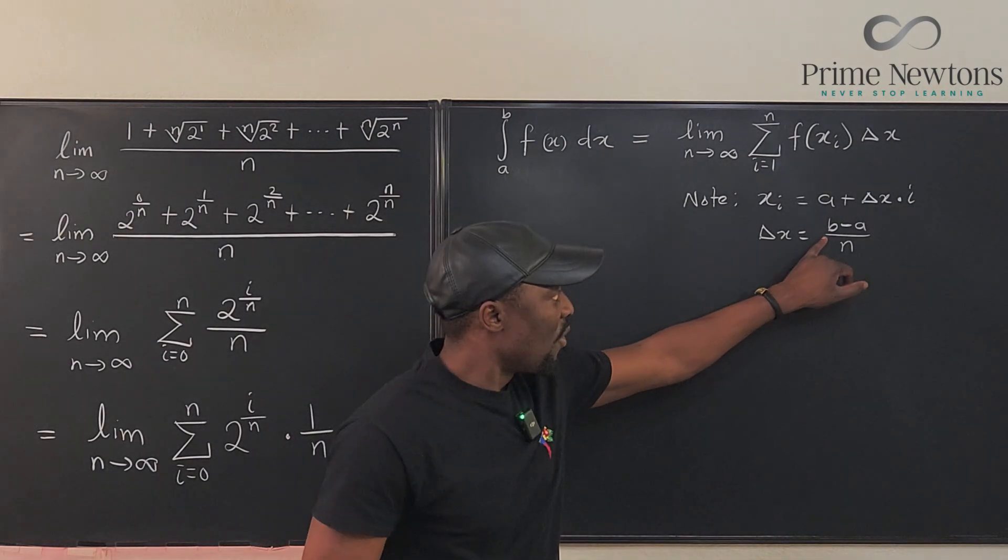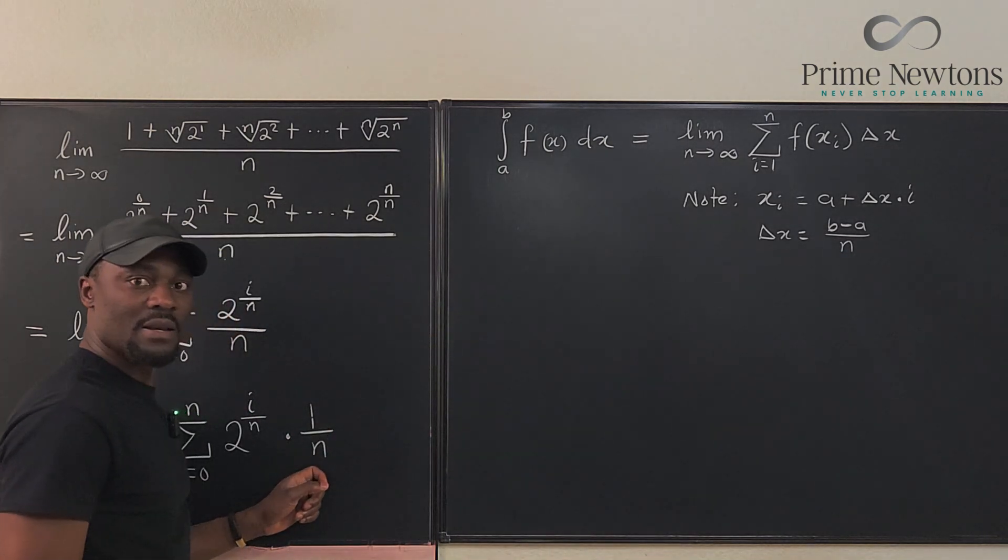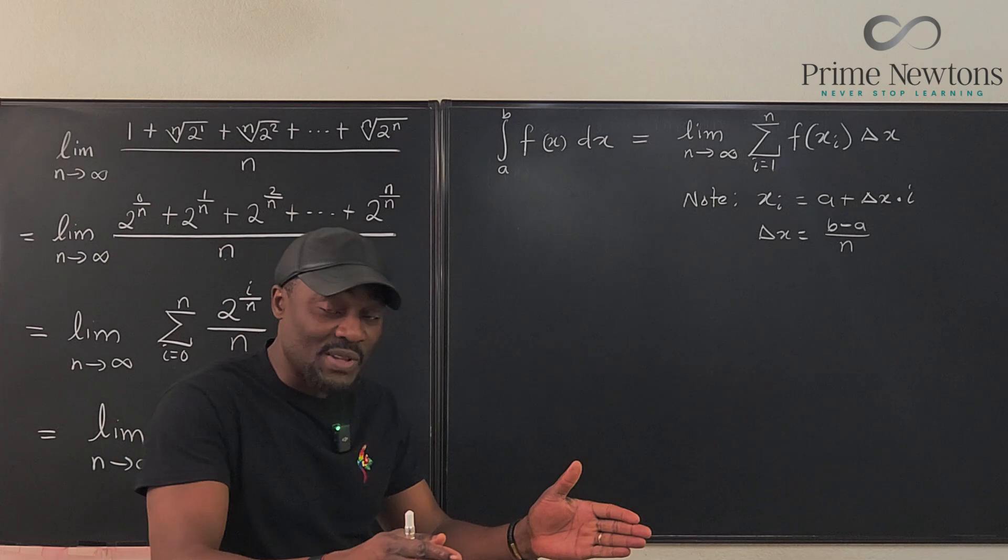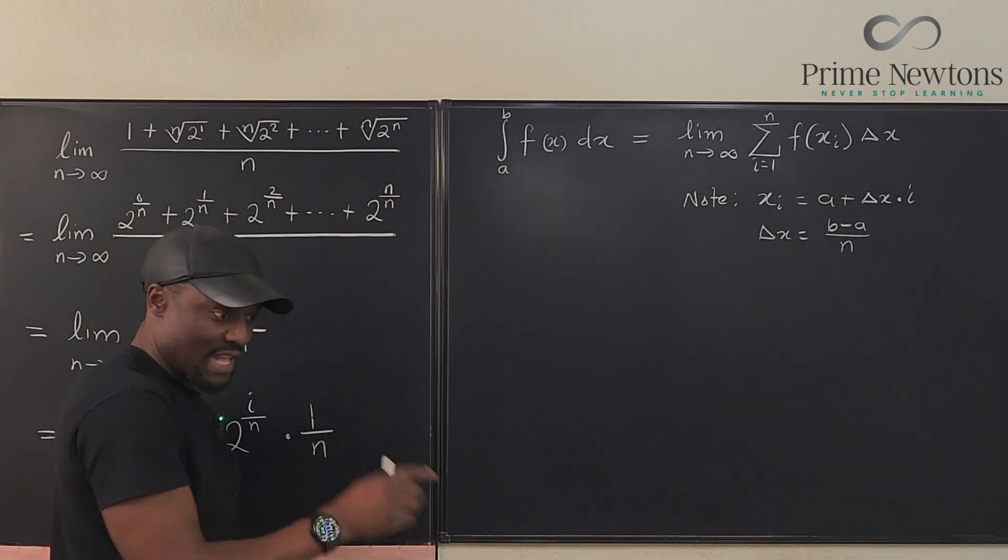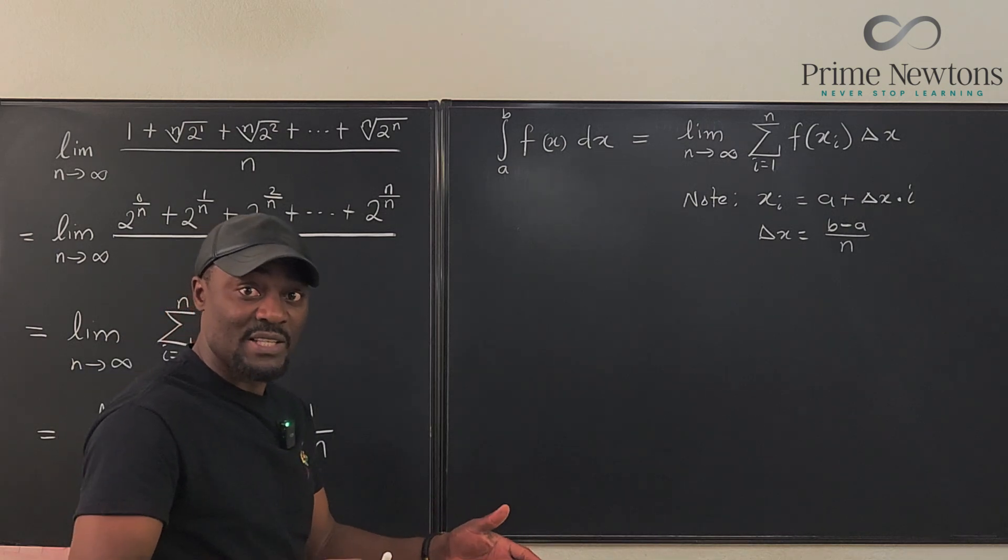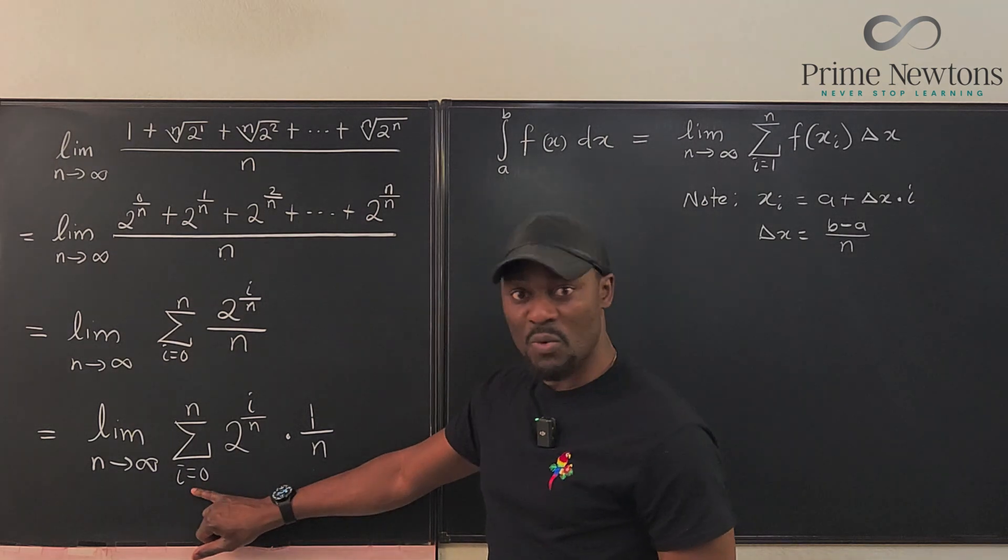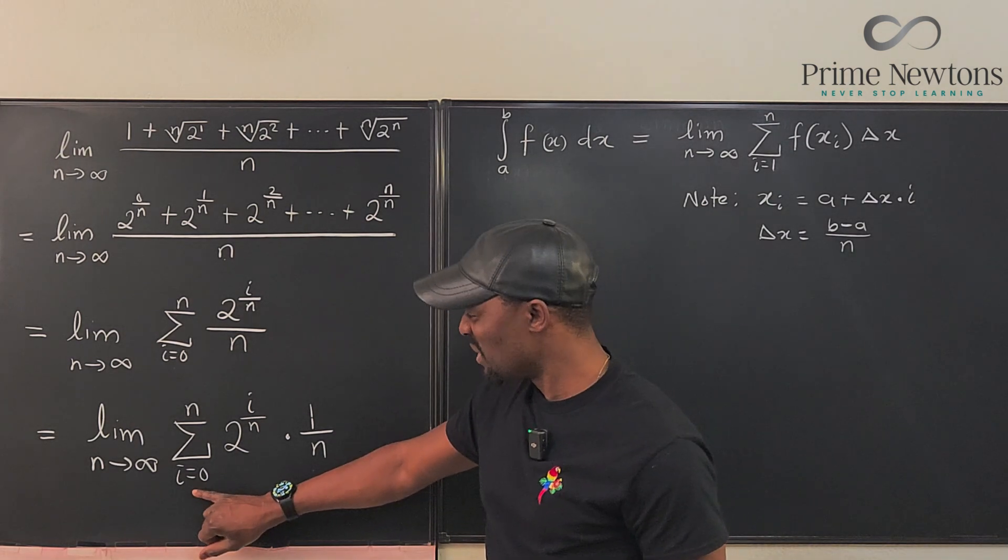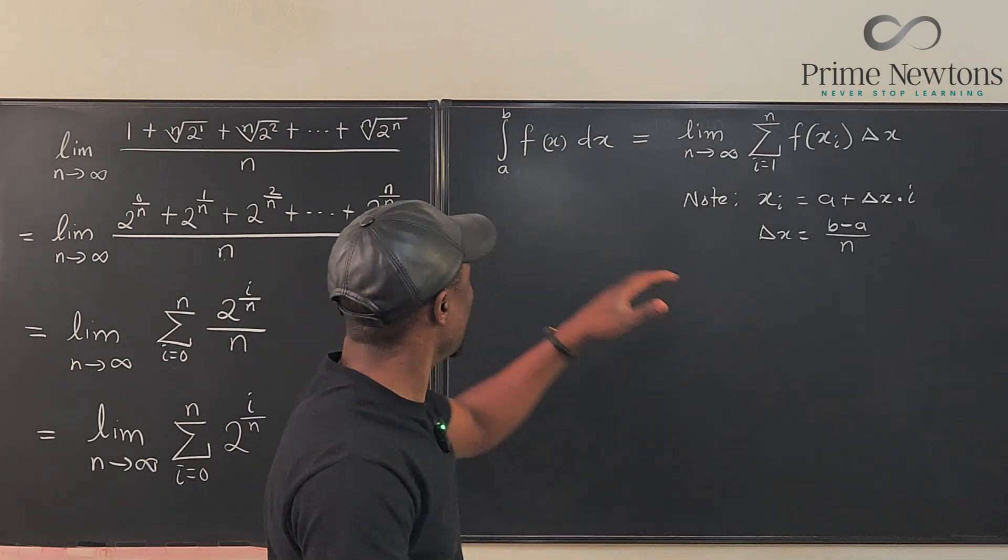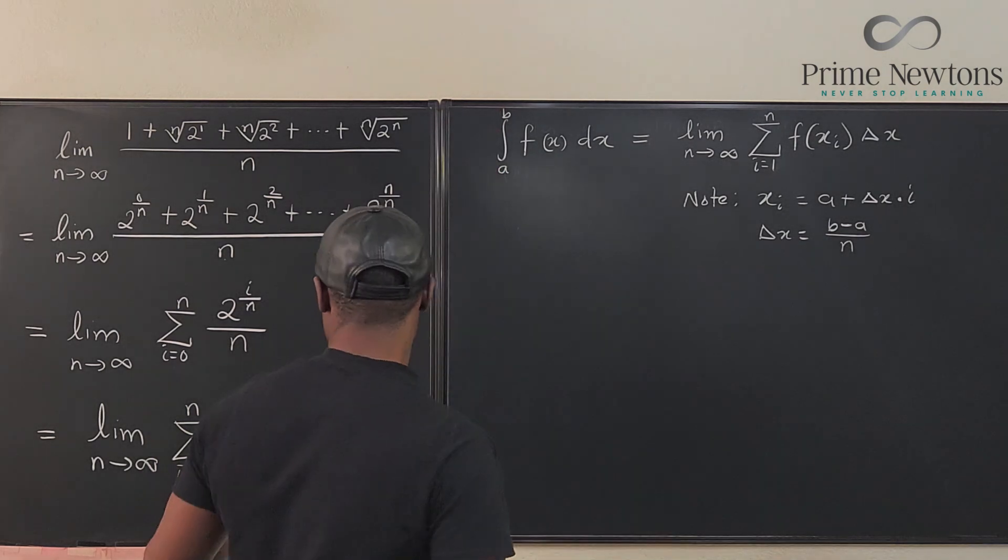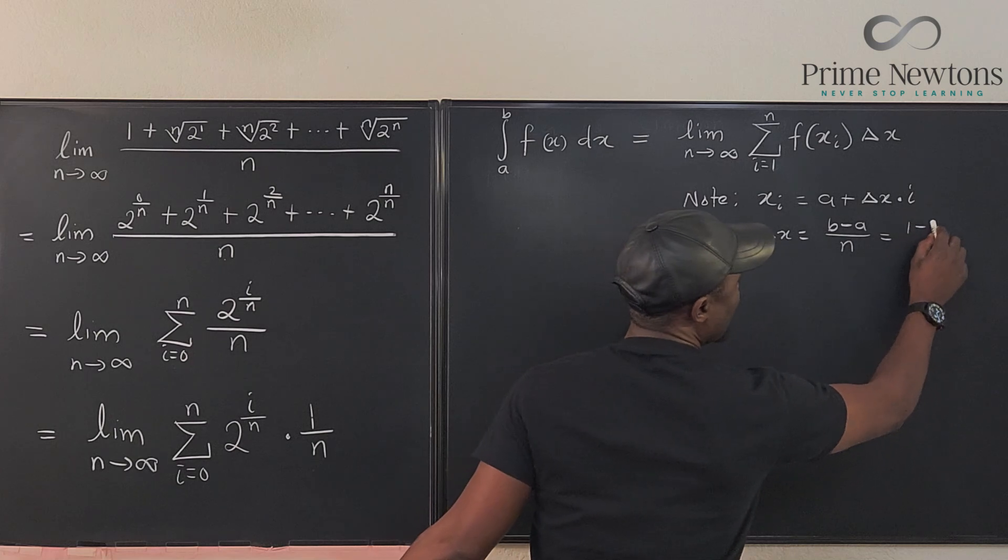Now, b minus a over n looks like 1 over n. So the entire interval that we're integrating over is just 1, because that's usually what this is, the entire interval you're integrating over. So it is convenient, if you look at what we have here, to say, based on what we have here, we're integrating beginning from 0 to 1. That would be a good assumption to make, that you're going from 0 to 1, the interval of your integration. So we can translate this, b minus a is the same thing, and you can say 1 minus 0 over n.